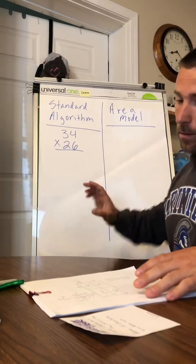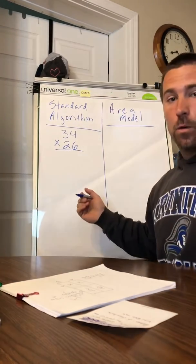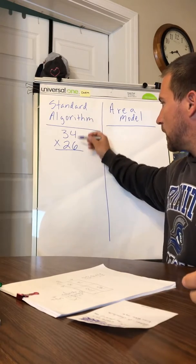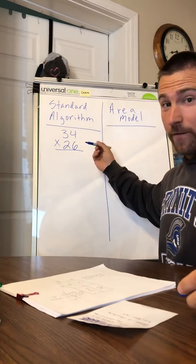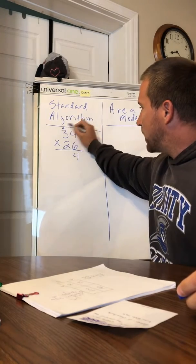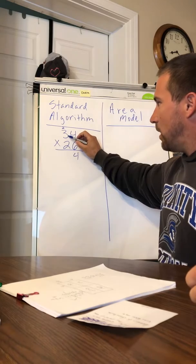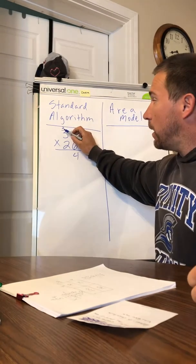Alright, so the first thing, if we're using the standard algorithm, we're just going to start in our ones. Six times four is 24. Put my four here, I'm going to carry my two tens up there. Now I'm going to do six times three is 18, plus the two I carried is 20.